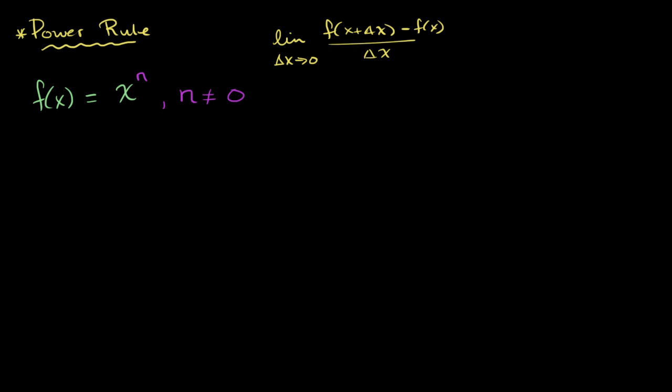The power rule tells us that the derivative of this, f prime of x, is just going to be equal to n, so you're literally bringing this out front, n times x, and then you just decrement the power, times x to the n minus 1 power. So let's do a couple of examples just to make sure that that actually makes sense.